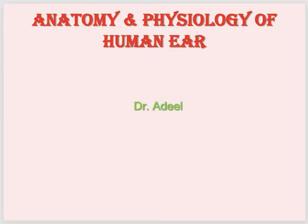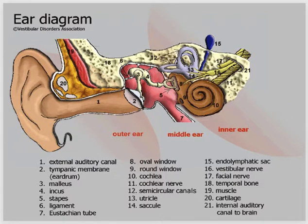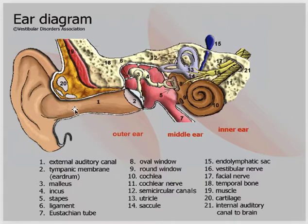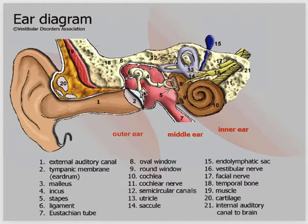This diagram shows the outer ear. The outer ear consists of the pinna, the external auditory meatus, and the tympanic membrane, which separates the outer ear from the middle ear. In the middle ear we have three bones, and then there is the inner ear, which is in the bony part of the skull.